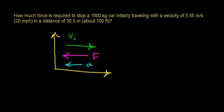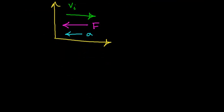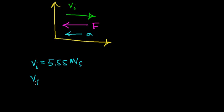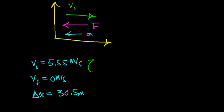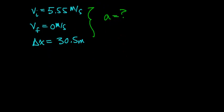In this case, the acceleration is really a deceleration — we're slowing the car down, so the force is going to be acting in the opposite direction of the initial velocity. We're not given the acceleration directly. We're given the initial velocity, which is 5.55 meters per second. The final velocity is going to be 0 meters per second — the car comes to rest. We're not given the time, but we are given the distance over which the object should come to rest, which is 30.5 meters. Using this information, we're going to find the acceleration of the car using our kinematic equations.